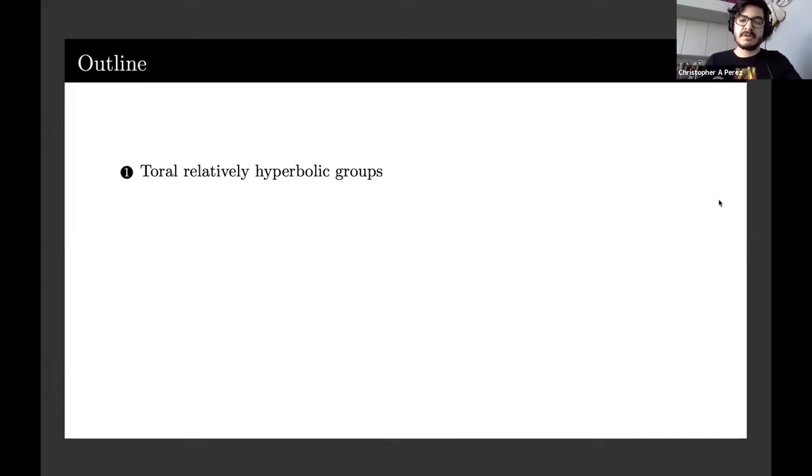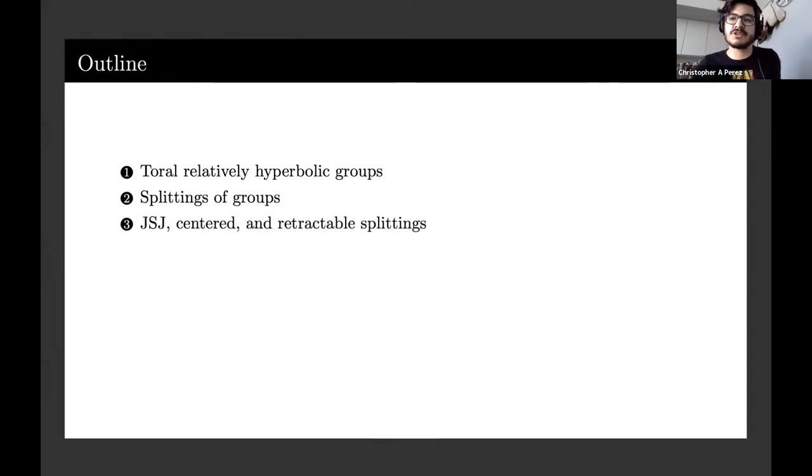First, I'm going to give a definition of what a toral relatively hyperbolic group is and talk about some properties of them. Next, I'm going to talk about splittings of groups for those who are unfamiliar with these ideas. Then I'm going to talk about certain important types of splittings which show up in my work and that are necessary to define the structure of a floor in a tower.